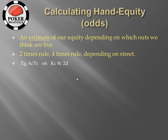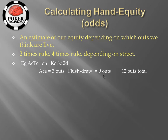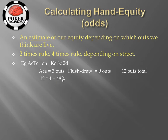The exact preflop action is not that important — all we really need to know is that by this point we have a reasonable idea of how villain's range looks. Let's say we think it's likely villain has a king, and that our ace outs are good and our flush draw outs are good. We have nine flush draw outs and three outs to hit our overpair, which gives us 12 outs in total. We are on the flop, so we use the four times rule: 12 times 4 gives us approximately 48% equity.